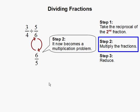Step 2, multiply the fractions. So when you take the reciprocal of the second fraction, our division problem becomes a multiplication problem. So we will end up having 3 over 4 times 6 over 5.